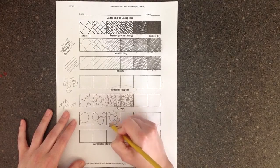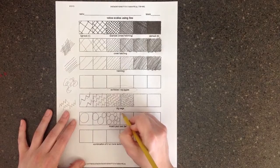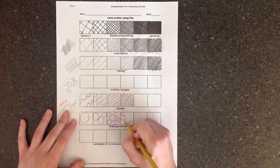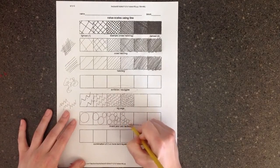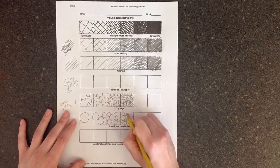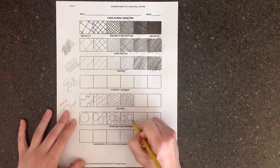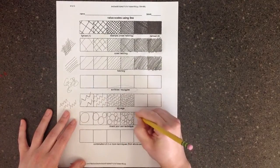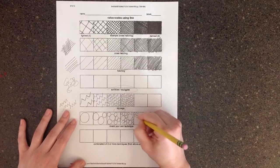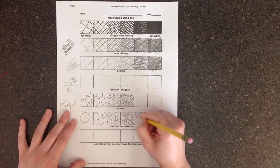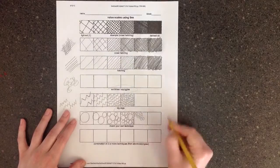So my circles are getting smaller. They're getting closer together. There's more of them. So it starts to seem like the value is getting darker. That's how I would finish that one.